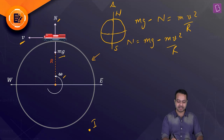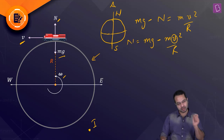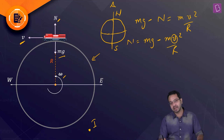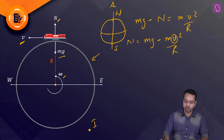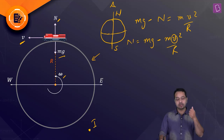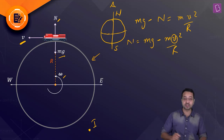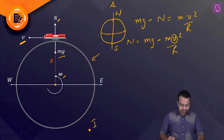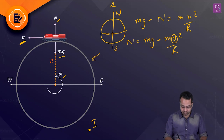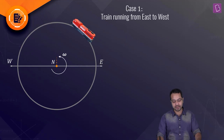From N = mg − mv²/r, if v is large, N is small; if v is small, N is large. So the train pressing the track with greater force corresponds to smaller speed with respect to the inertial frame. We need to determine the relationship between the speeds of the two scenarios.